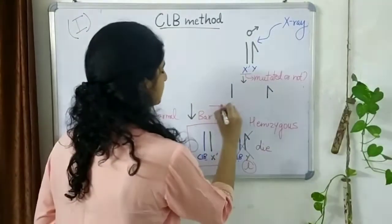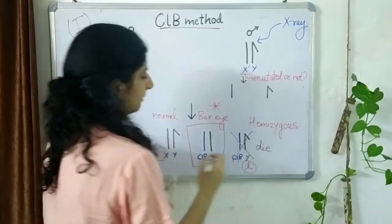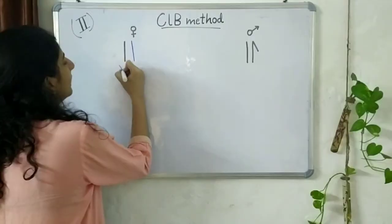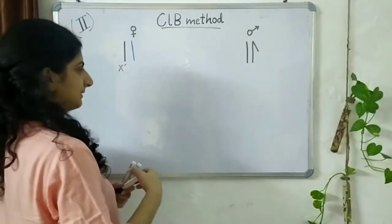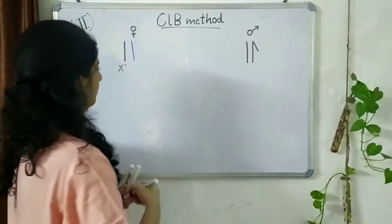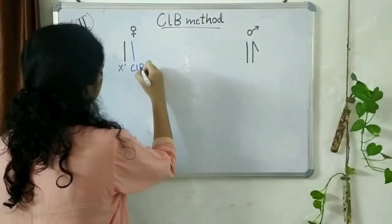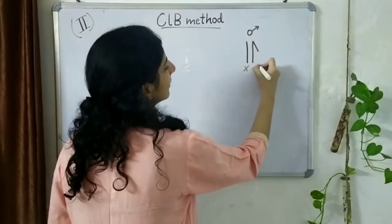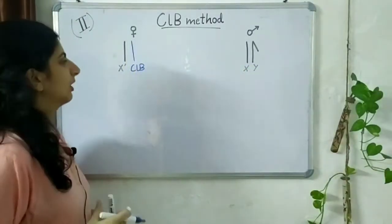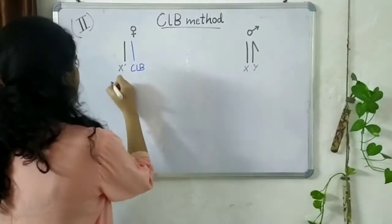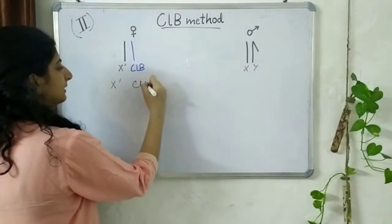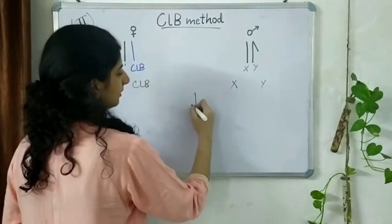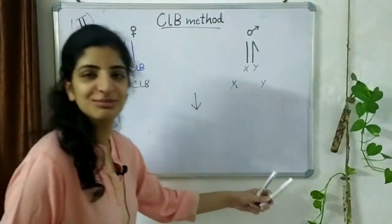So, now we will move on with this female to our second cross. In this second cross, we now had an irradiated X and a CLB chromosome female with us and a very normal and healthy male. So, now again gametes will form the X dash CLB X and Y and in the progeny again four different possibilities are possible.